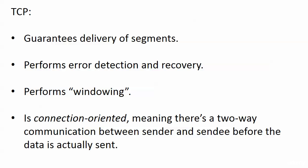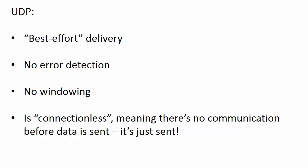Connection-oriented means there's a two-way communication between the sender and the receiver before the data is actually sent — there's an underlying agreement on a couple of values. With UDP, we have best-effort delivery, no error detection, and no windowing. UDP literally cannot deliver these things, as you'll see in the headers.